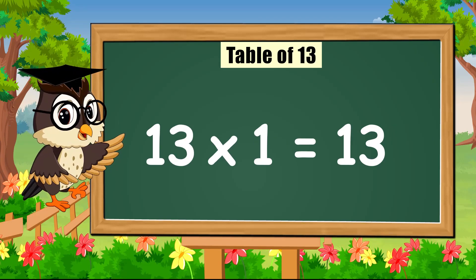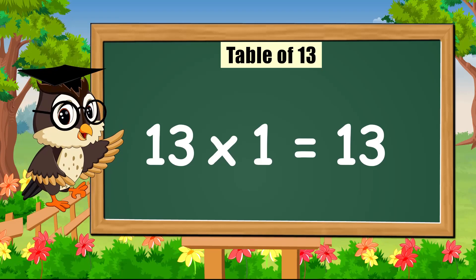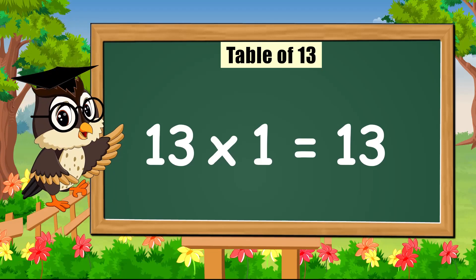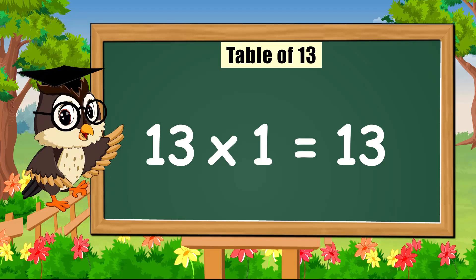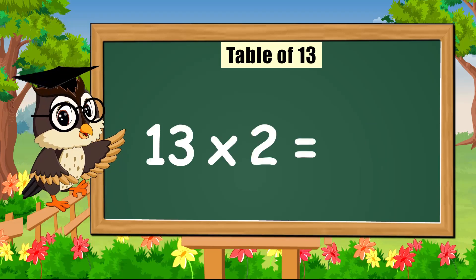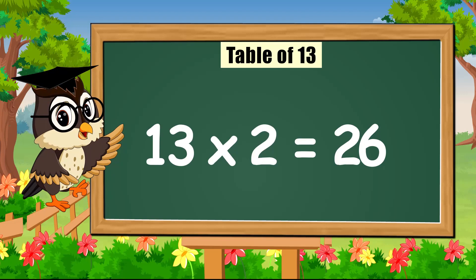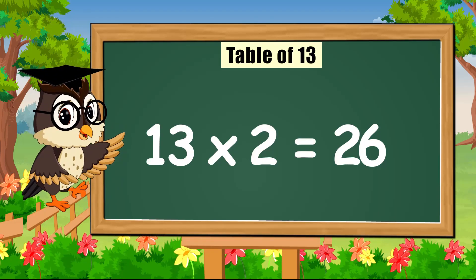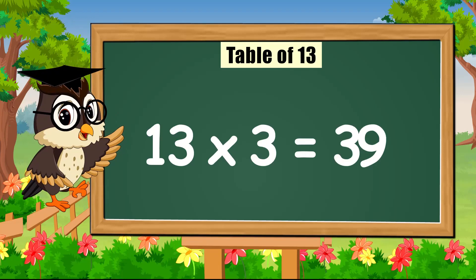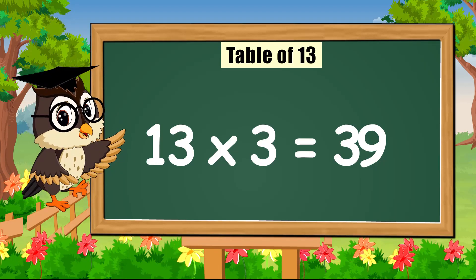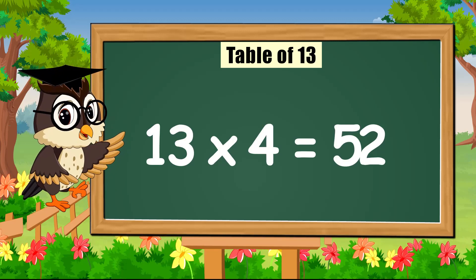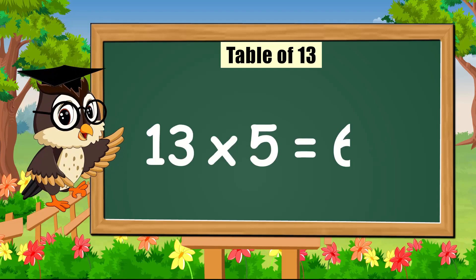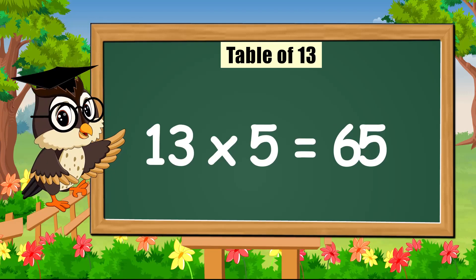Hello everyone, we are gonna learn today. So sing with me the table of thirteen. Come on! Thirteen times one is thirteen. Thirteen times two is twenty-six. Thirteen times three is thirty-nine. Thirteen times four is fifty-two. Thirteen times five is sixty-five.